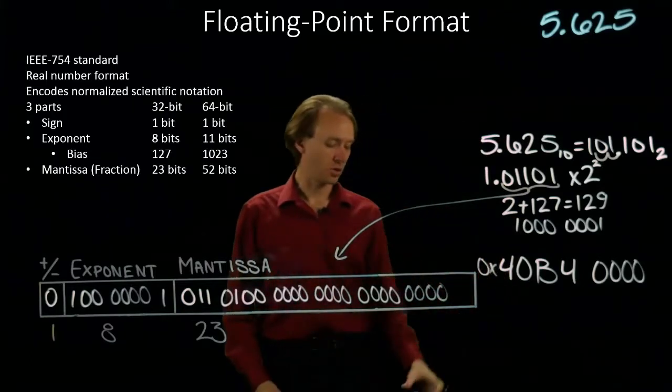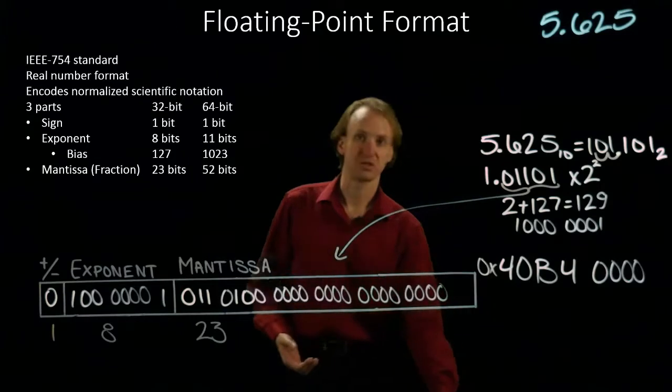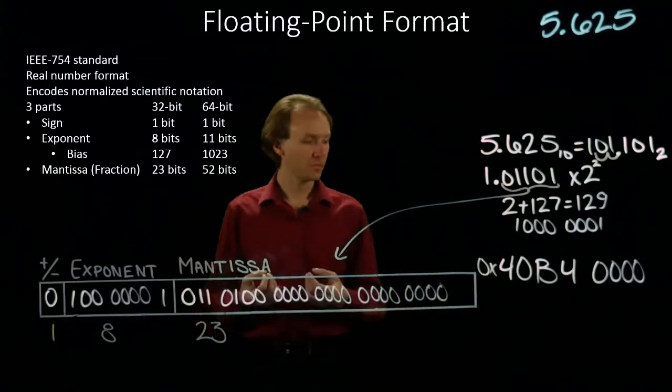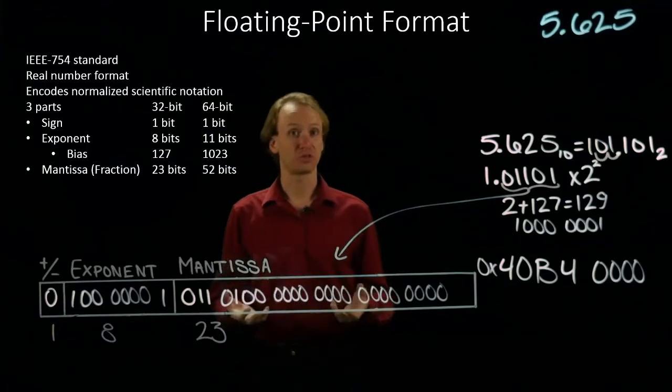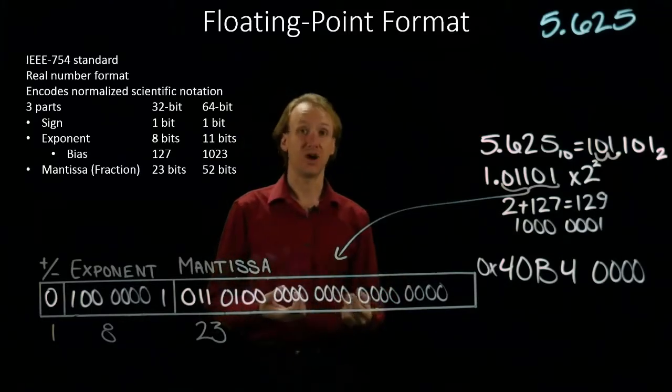And I'll put a 0x at the beginning to indicate that this is a hexadecimal representation. So either of these would be an acceptable form of the floating point representation for 5.625.